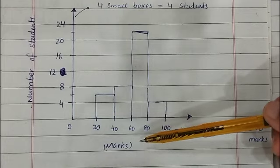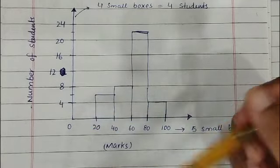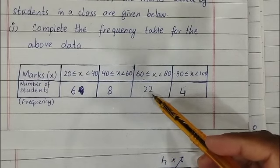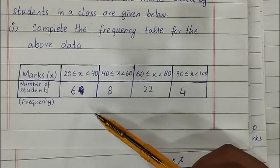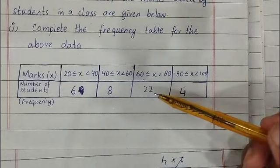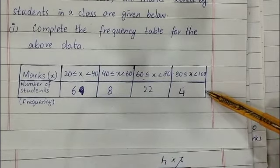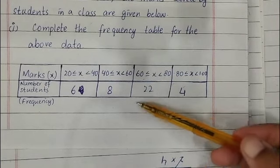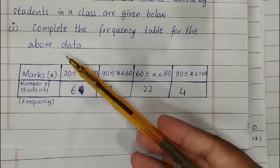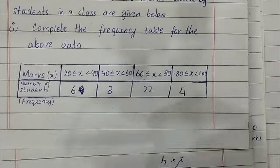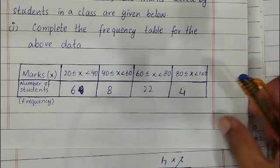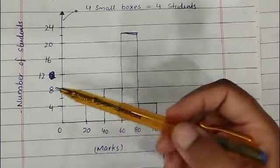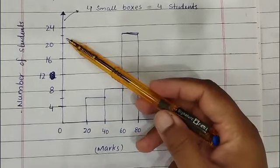In this frequency table, the maximum frequency is 22. We are going to place the maximum frequency and two extra numbers to draw the bars, because the horizontal line contains these numbers. So I am going to take the maximum frequency, add two to it, giving us 24, and then place the numbers in groups on the vertical line.